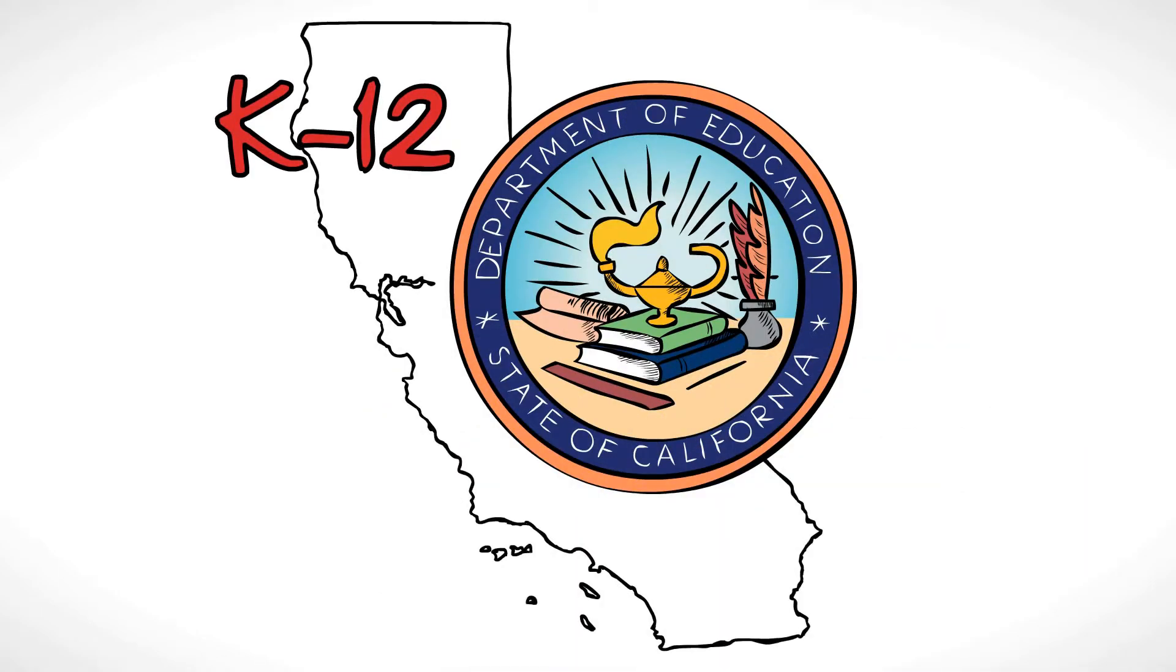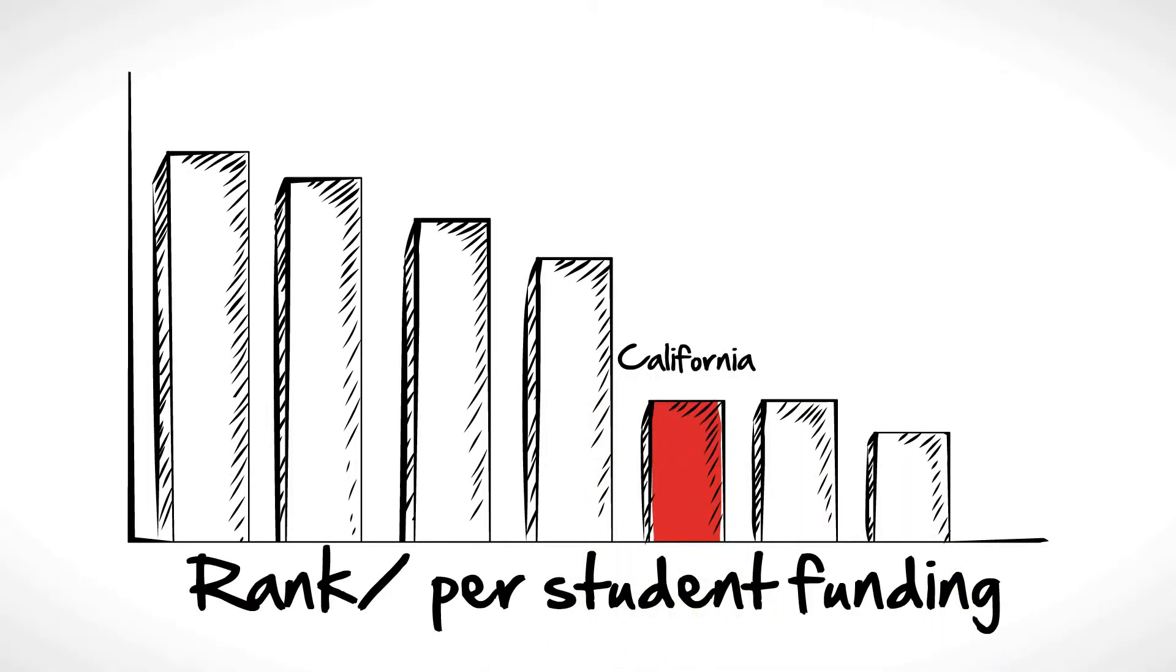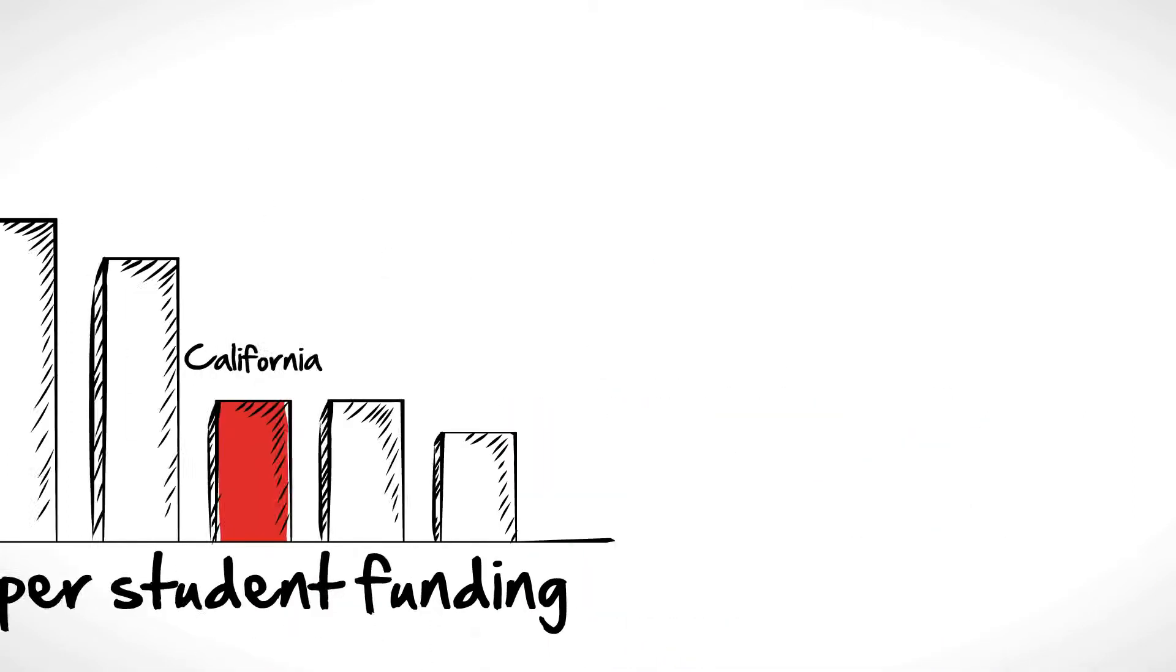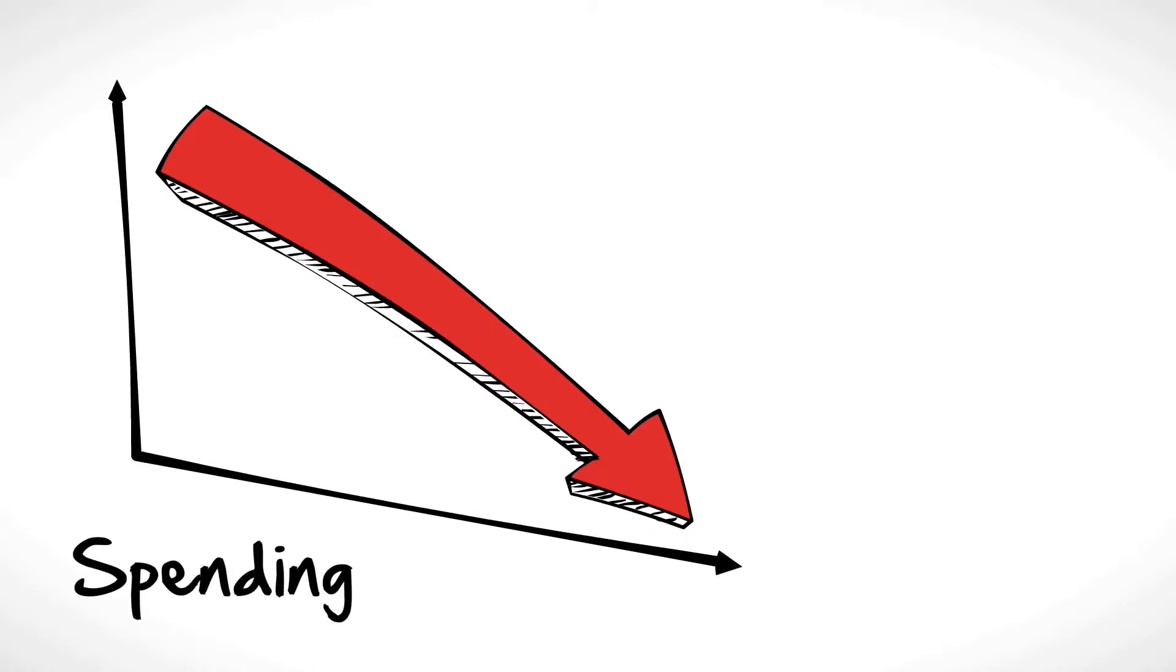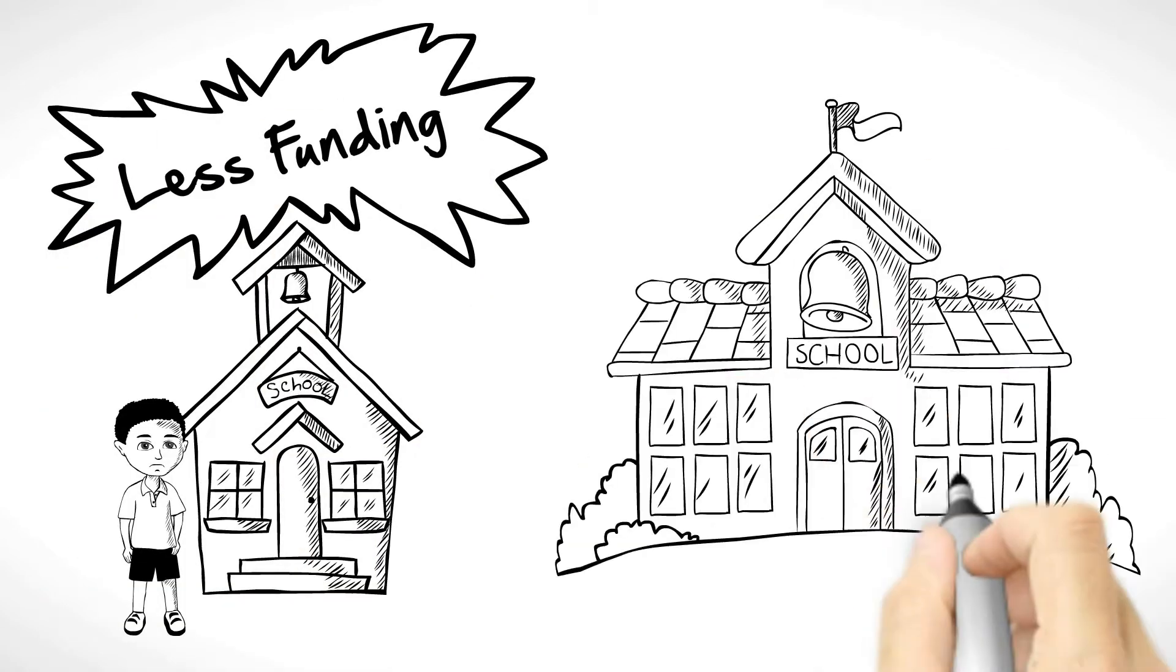K-12 education in California is in crisis. Not only does California rank near the bottom in per-student funding, and spending has been drastically cut, but students in low-income schools receive less funding than kids in well-to-do neighborhoods.